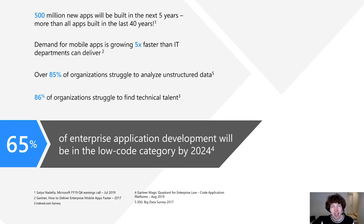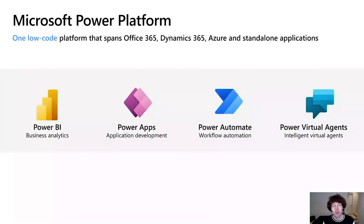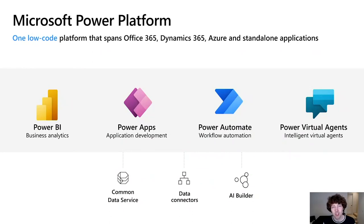All of these things are mixing together to make it so that 65% of enterprise application development is going to move towards the low-code category by 2024, according to Gartner. And when we talk about low-code at Microsoft, we're really talking about the Microsoft Power Platform — the single low-code platform that spans Office 365, Dynamics 365, Azure, and your standalone applications.